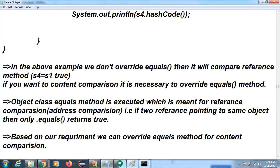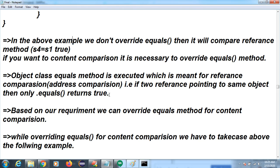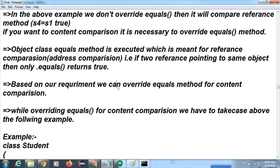How do we compare content? We have to override the equals method. In the above example we didn't override equals, so it compared reference. If you want content comparison, it is necessary to override the equals method. Object class equals method is for reference comparison — if two references point to the same object, only then equals returns true.